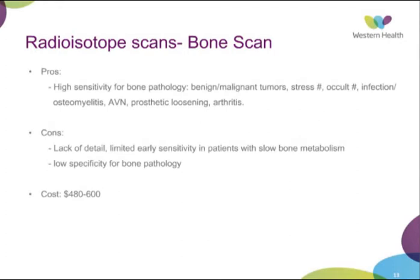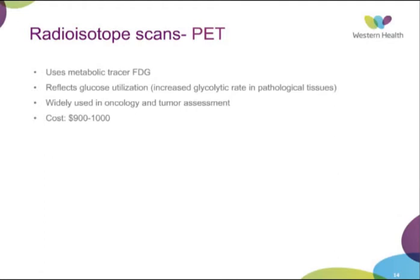The pros of bone scans: high sensitivity for bone pathology such as benign and malignant tumours, stress fractures, and occult fractures — useful when a fracture is suspected clinically but not visible on x-ray, such as femoral neck fractures. Also useful for osteomyelitis, AVN, prosthetic loosening, and arthritis. However, after joint replacement, a bone scan will be hot for at least the first 12 months, then cool down; ongoing hot spots after that period may indicate loosening or infection. The cons: lack of detail, limited early sensitivity in patients with slow bone metabolism, and low specificity despite high sensitivity. Cost is $480 to $600 depending on the scan type and tracer used.